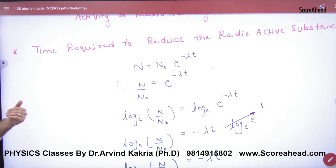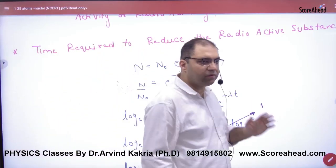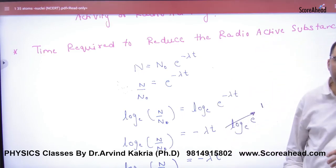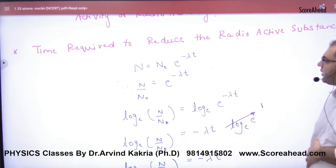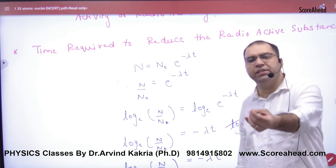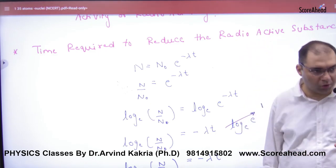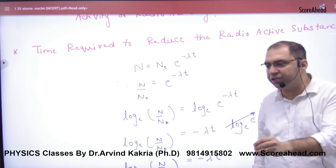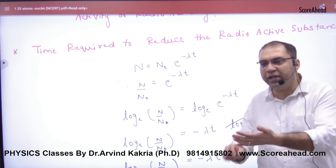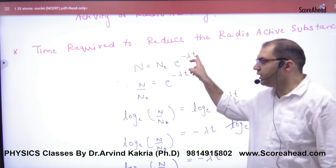Time required to reduce the radioactive substance. What is the number of atoms? N0. After time T, how much? N. You have to calculate small t.